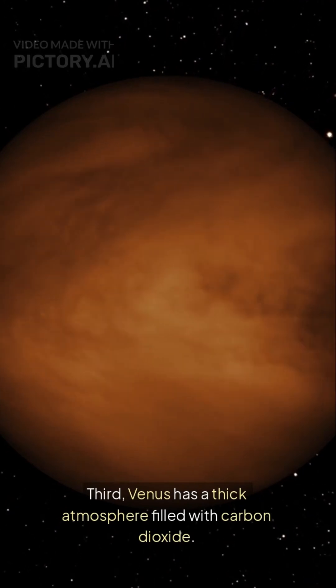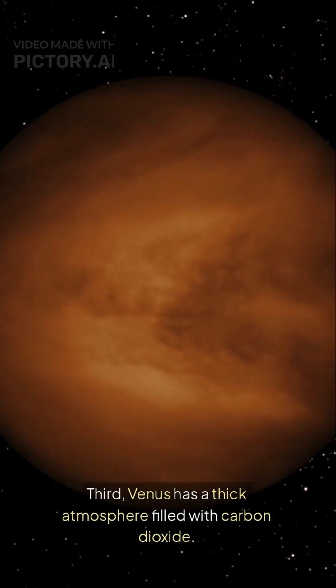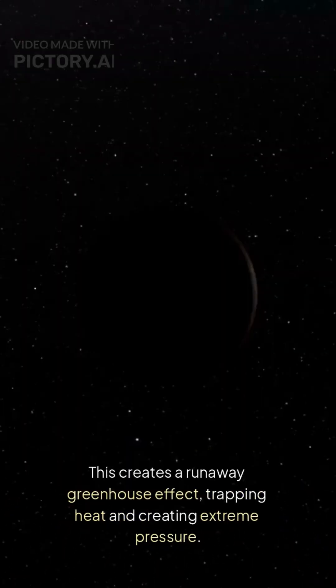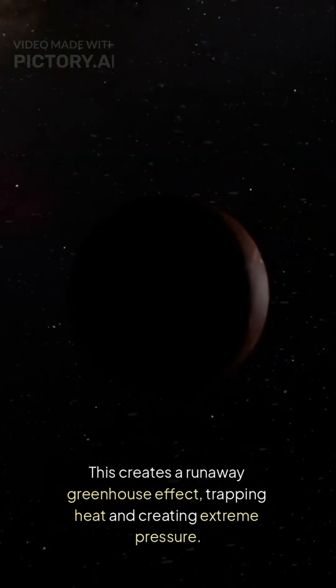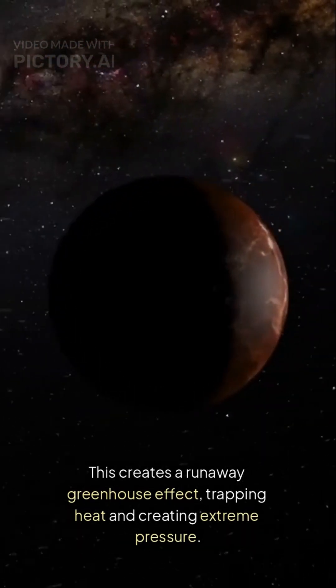Third, Venus has a thick atmosphere filled with carbon dioxide. This creates a runaway greenhouse effect, trapping heat and creating extreme pressure.